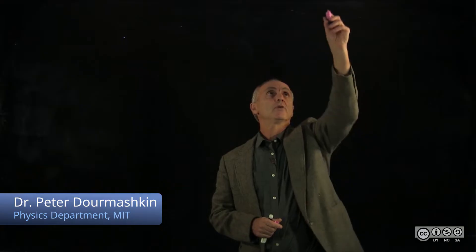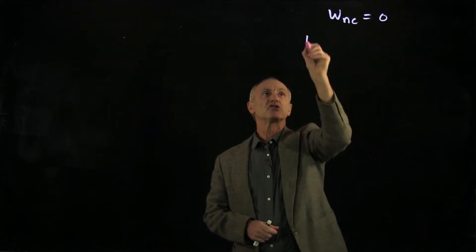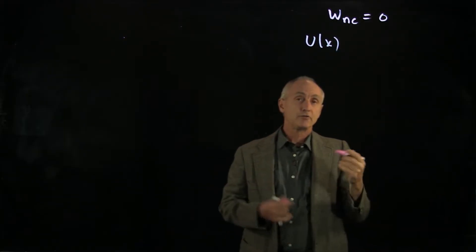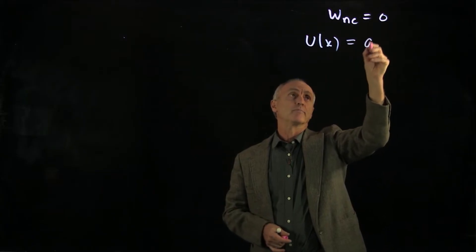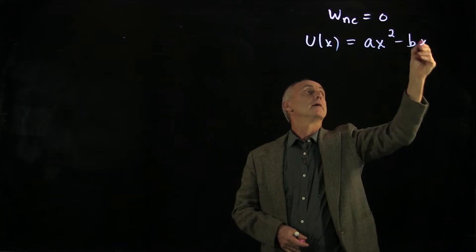Let's consider a system in which there is no non-conservative work, and there is a potential energy associated with forces in the system. For an example, let's write our potential energy like the following. We'll model some system by the function U(x) = ax² - bx³.